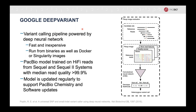Google DeepVariant is a machine learning based approach for calling small variants. It works by first using a very sensitive caller to generate pileup images of candidate variant sites. It takes a lot of information about these candidate variant sites and passes this to a convolutional neural network. The output is genotype likelihoods corresponding to how likely this will be a homozygous ref, heterozygous, or homozygous alt. DeepVariant can run on either GPU or CPU, and it can run from binaries as well as from Docker or Singularity images created by the Google DeepVariant team. The PacBio model is trained on HiFi reads from Sequel and Sequel II systems with median read quality of 99.9%, so Q30 or above. The model is updated regularly to support updates to chemistry and software.